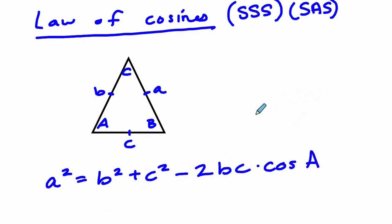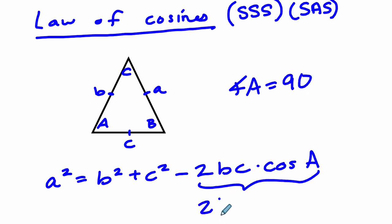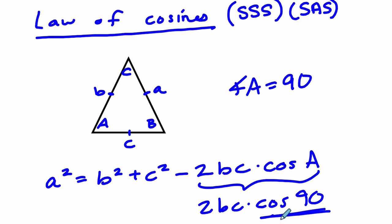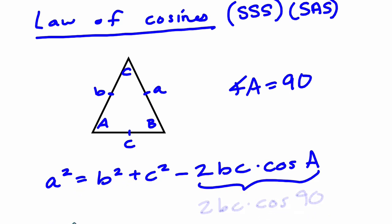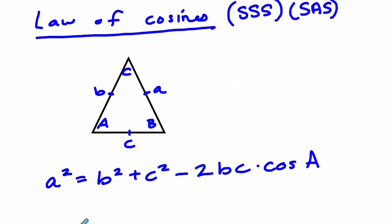The reason we can tell it connects to the Pythagorean theorem: if angle A is 90 degrees, you get 2BC times the cosine of 90. The cosine of 90 is 0, so this whole term cancels out, leaving just the Pythagorean theorem. What's amazing about this formula is that it extends beyond right triangles.